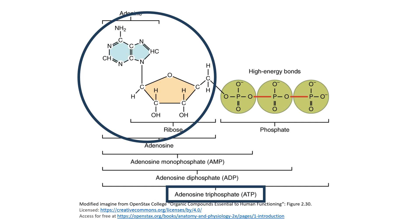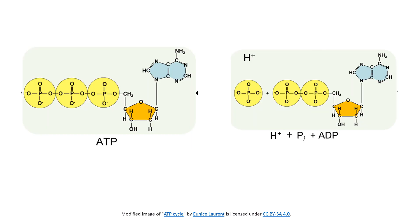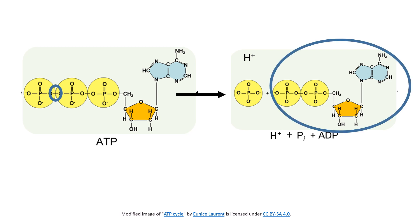ATP has three phosphate groups. These phosphate groups are attached to one another through what are known as high-energy bonds. What happens to ATP within our cells is the high-energy bond between the second and third phosphate group is broken, and what this creates is what's known as adenosine diphosphate, or ADP.